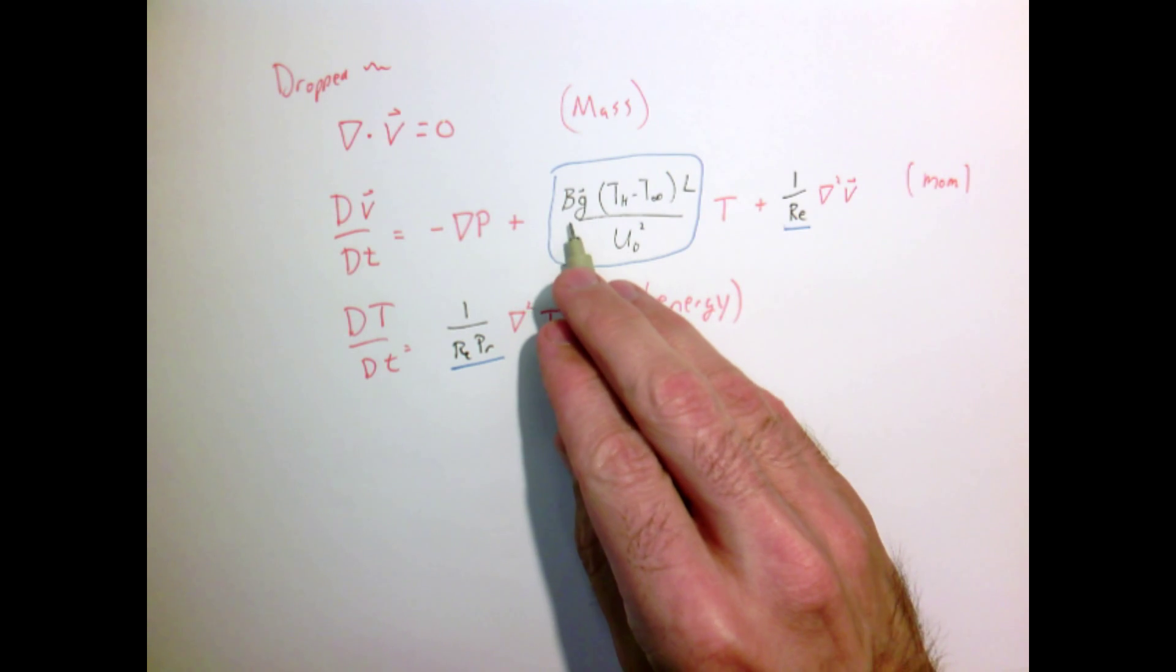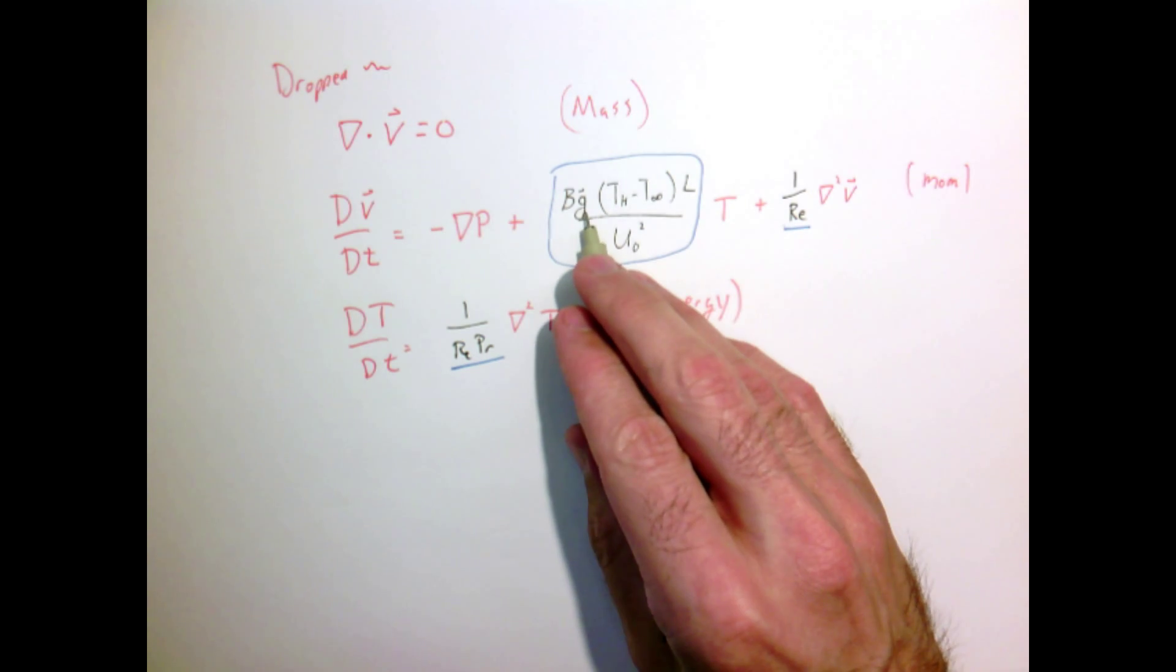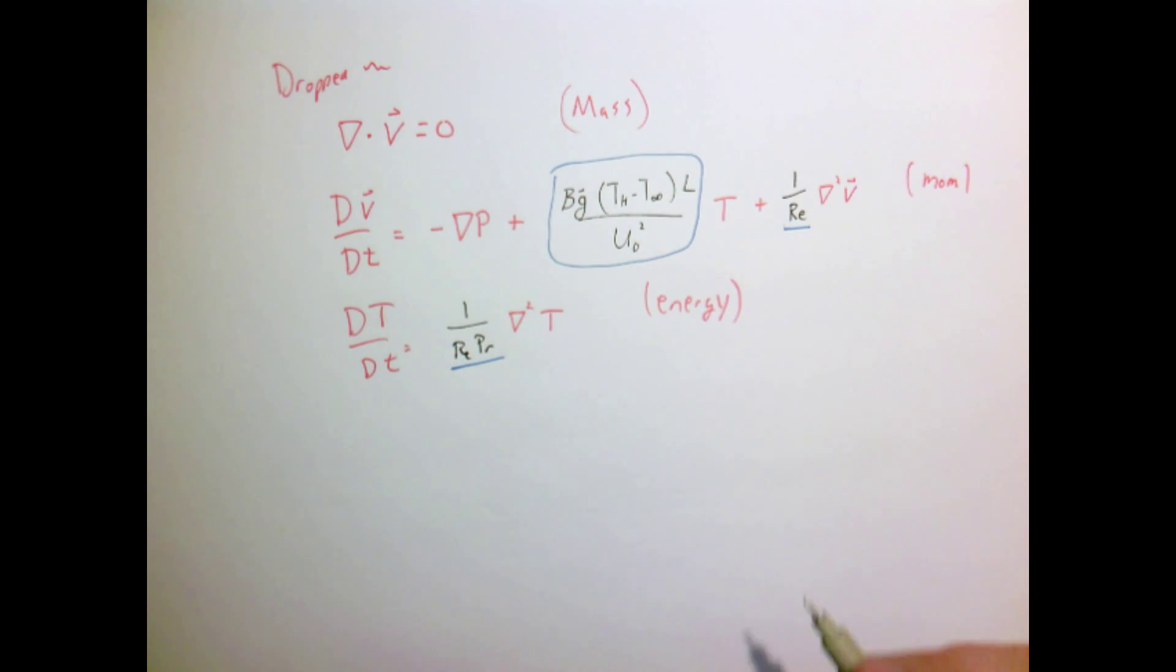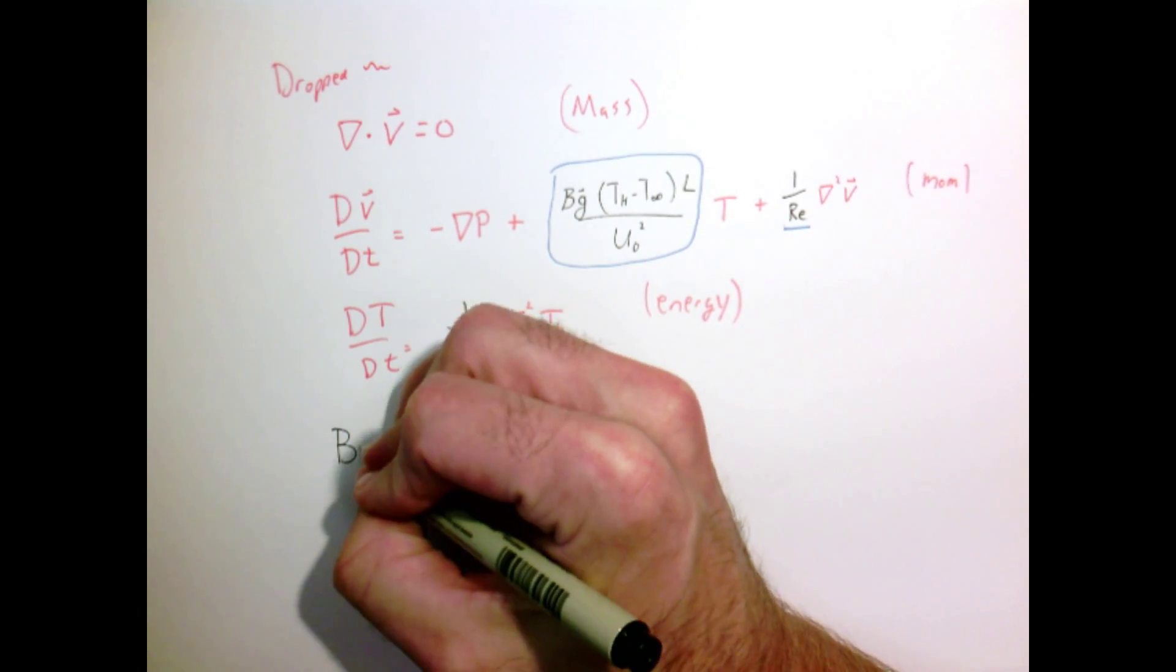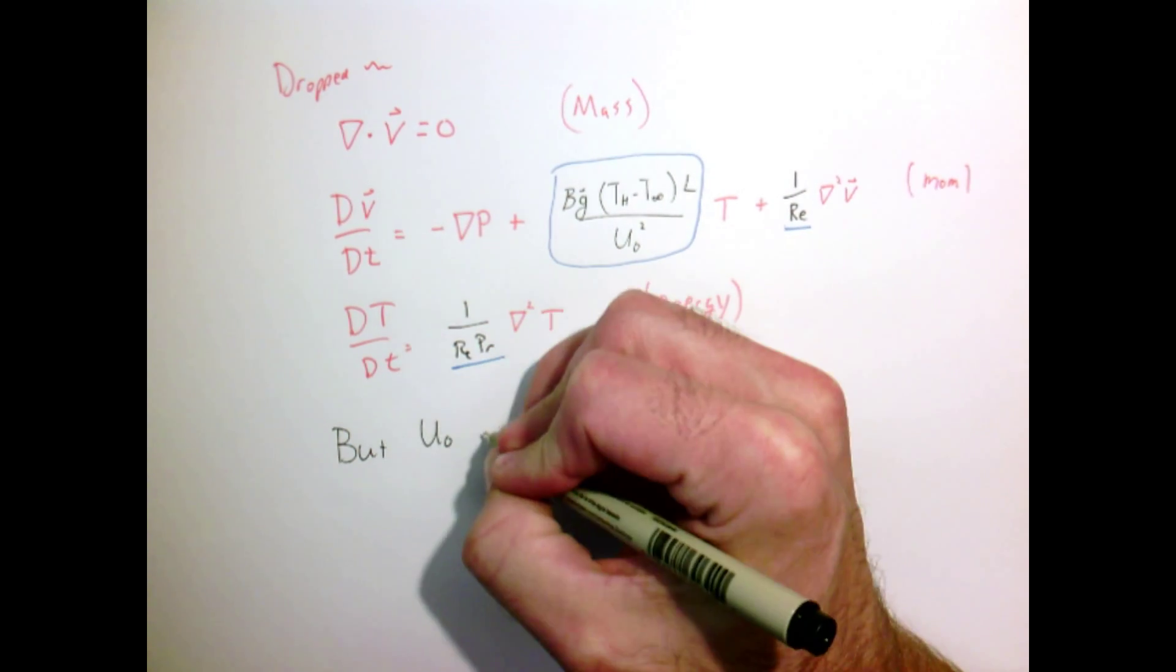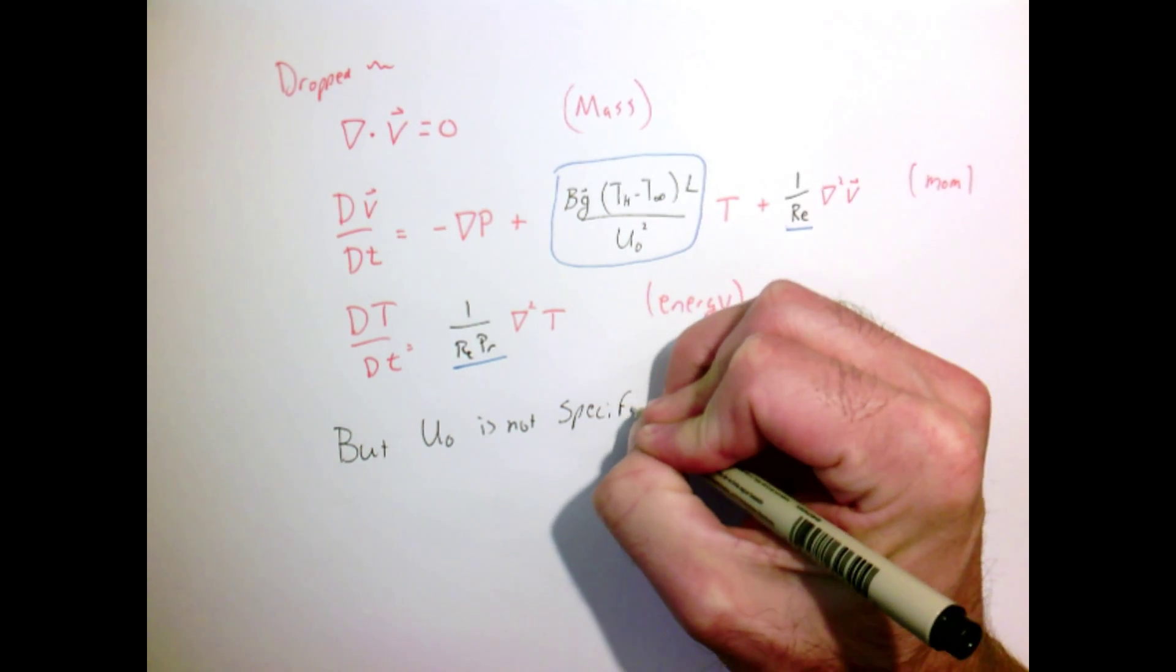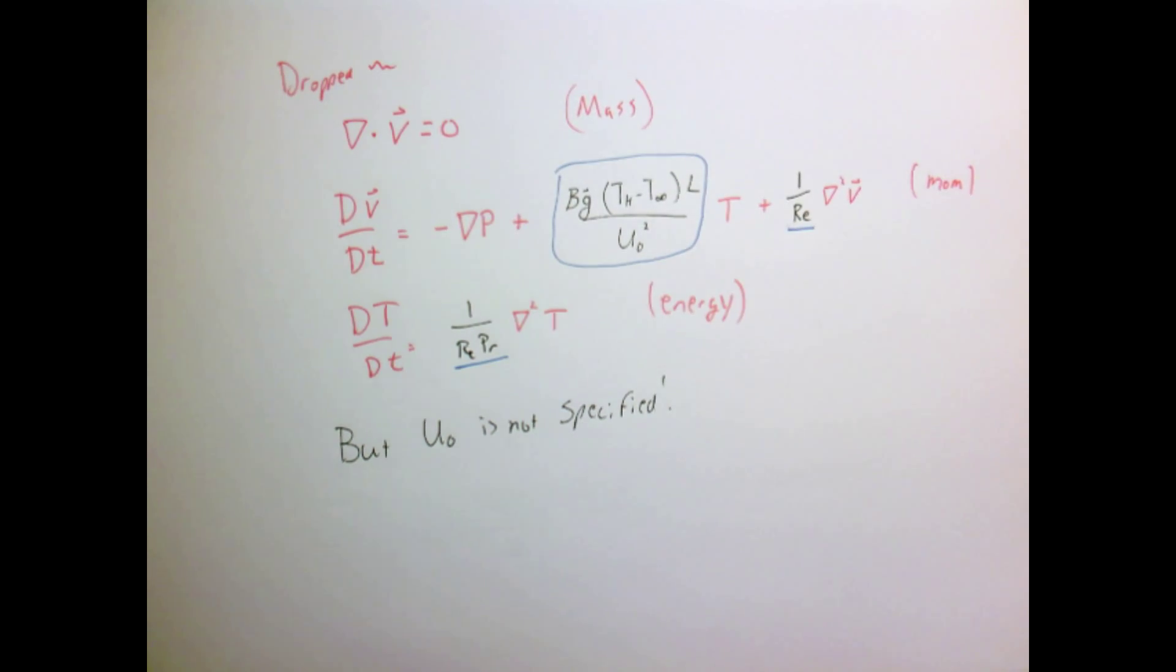I have this new parameter which shows up, given as the volumetric expansion times gravity times T_hot minus T∞ times our length scale, the size of our object, divided by u₀². But we have to realize in this problem of natural convection, we're talking about setting a pizza out on the counter in nominally still air.